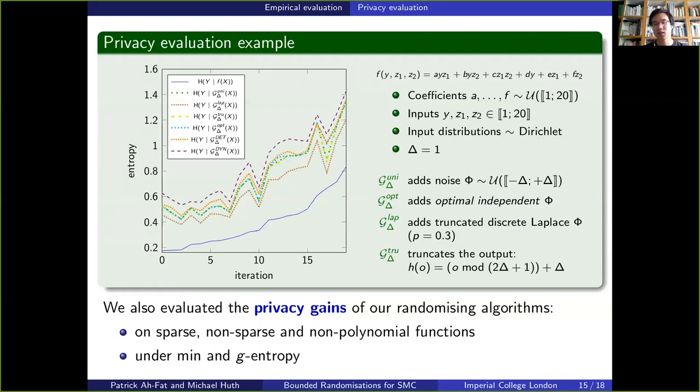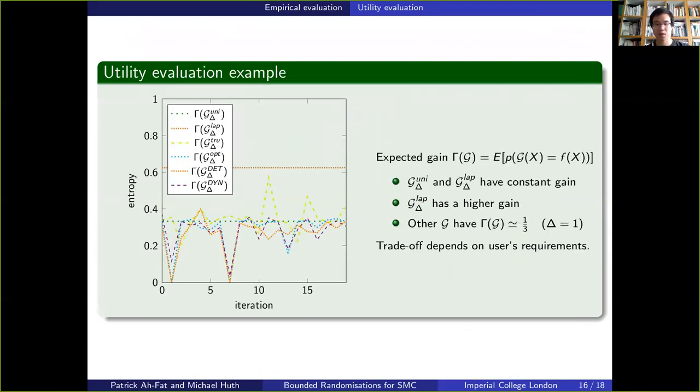We also evaluated our mechanisms on other non-polynomial functions and different entropy measures. So as I've just said, the Laplace mechanism is designed to ensure a high expected gain, which is another kind of utility measure. So it is fair to evaluate our mechanisms with this utility measure to see how they compare.